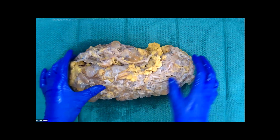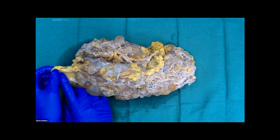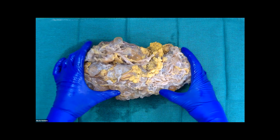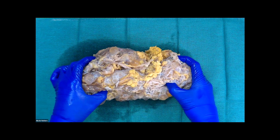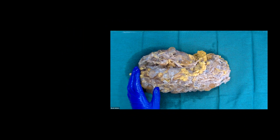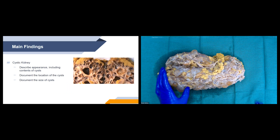Other measurements to include are the perinephric soft tissue — all of this fat located here — and the adrenal gland if present. For our main findings, we describe the cystic renal parenchyma: the appearance of the cysts and their content. The cysts might be filled with clear fluid, gelatinous material, or hemorrhage.